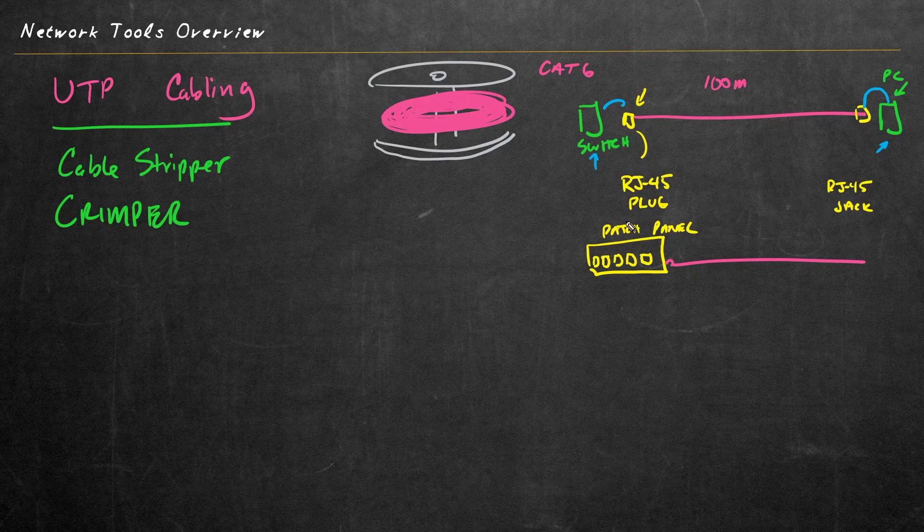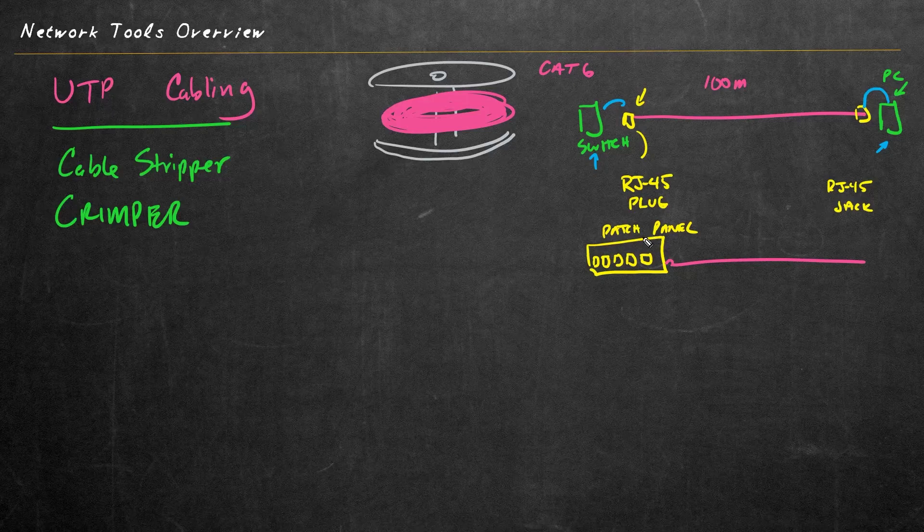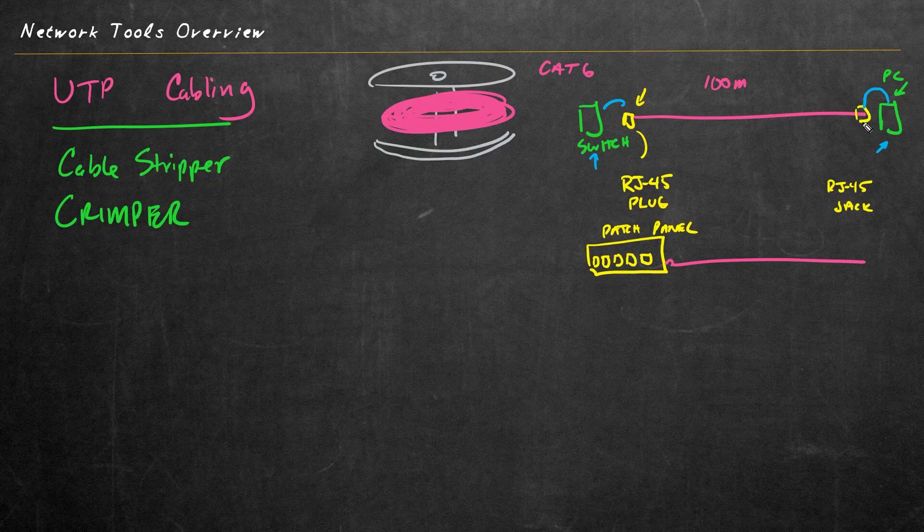Now, if we're terminating the Ethernet cable on the back of a patch panel or on the back of a little RJ45 jack, we're going to need a device that can push those wires on the back end into the correct spots for the connectivity.